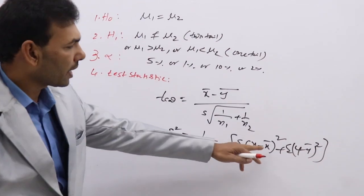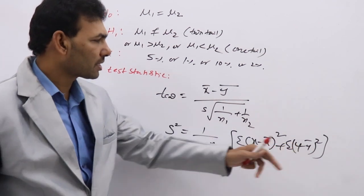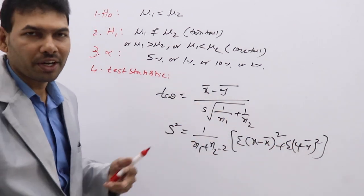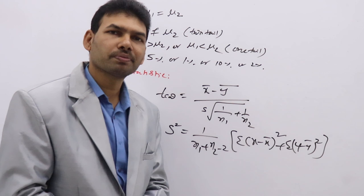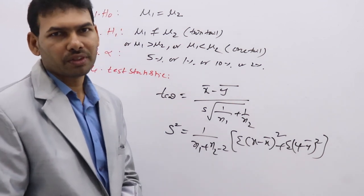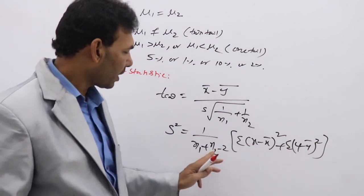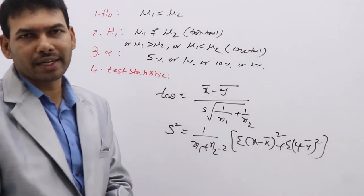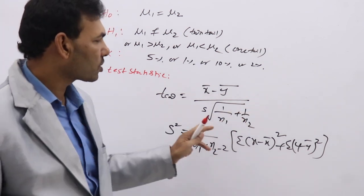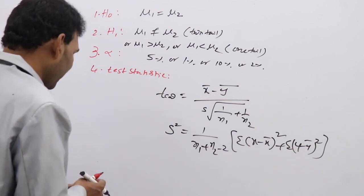Here, X-bar is the first sample mean and Y-bar is the second sample mean — two means will be given. For the two samples, you need to calculate X-bar and Y-bar. Next, calculate S². Taking the square root of S² gives S. Then find T calculated.